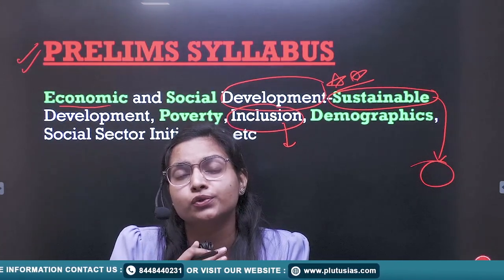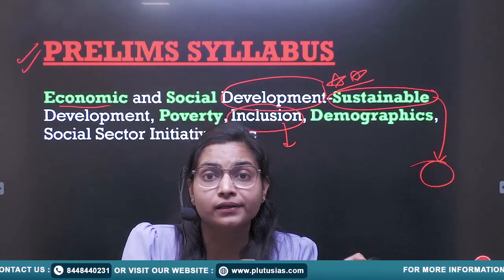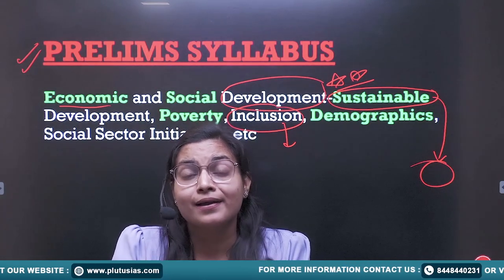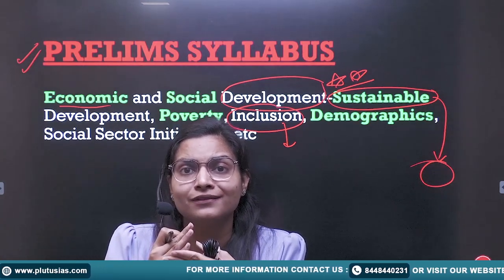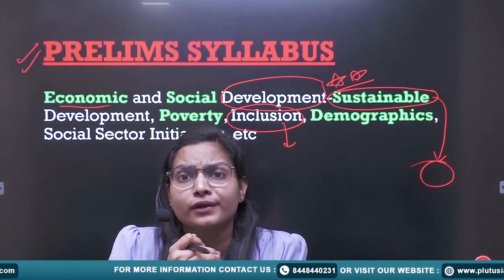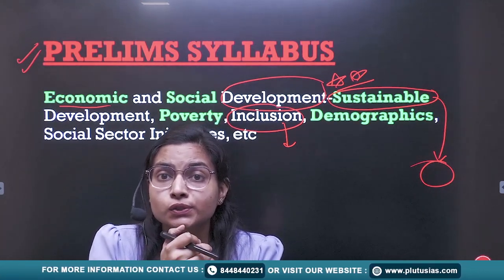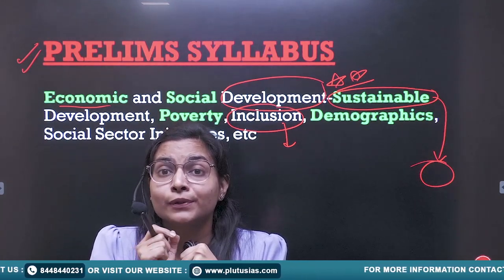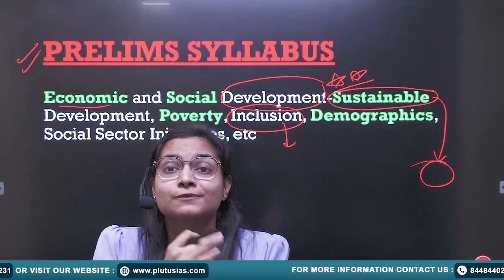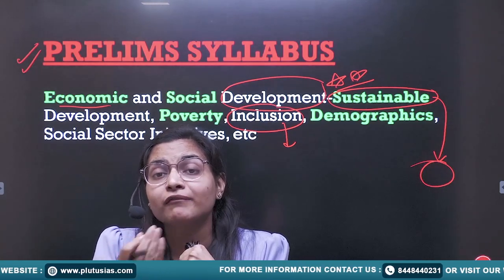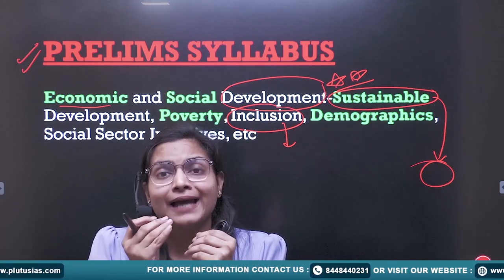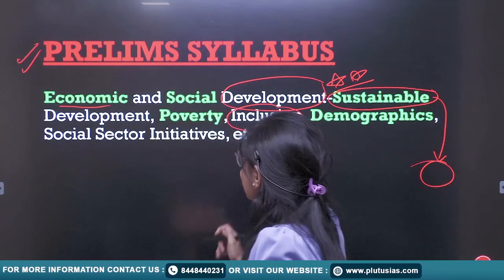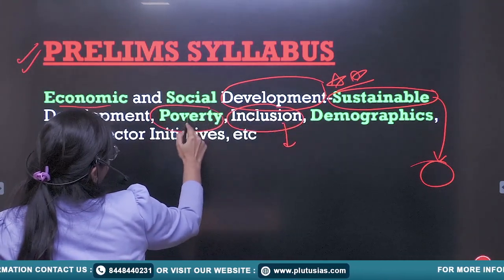This is why it is needed to read the syllabus — whenever you read the newspaper or any other subject, you will be able to decide whether topics are helping in sustainable development. For example, if the government is focusing on solar energy, you can think it will help in sustainable development because it creates less pollution and is environment friendly — so it can be asked in prelims.